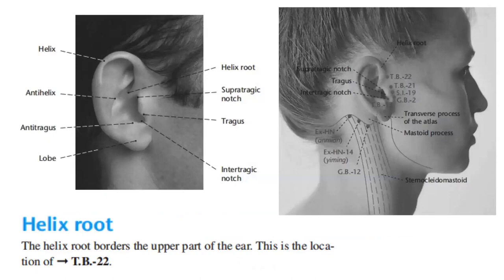Here we have an illustration of the anatomy of the ear showing the helix, the anti-helix, the anti-tragus, the lobe, the helix root, the supratragic notch, the tragus, and the intertragic notch, along with the acupuncture points near this area.